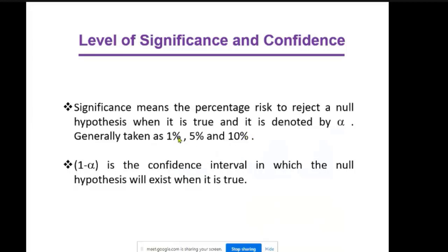That means level of errors: 1%, 5%, or 10%. One minus alpha is the confidence interval in which the null hypothesis will exist when it is true. That means one minus error.